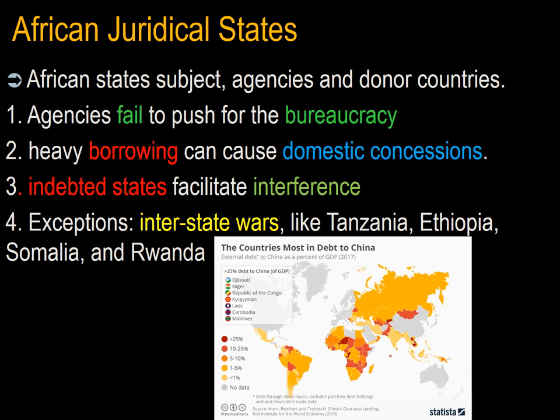The consequence of the weakness of African states is that they are subject, as weak states, to the dictates of aid agencies and donor countries. The interference of these agencies and donors may in fact retard state development in Africa. First, these states fail to push for internal development of their bureaucracies. Second, heavy borrowing makes states subject to heavy interest payments and to making domestic concessions in exchange for repayment alleviation. Third, the continued weakness of indebted states facilitates interference by wealthier states in their domestic affairs, influencing sub-state actors.